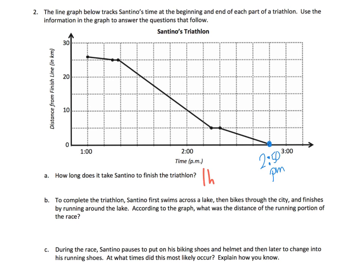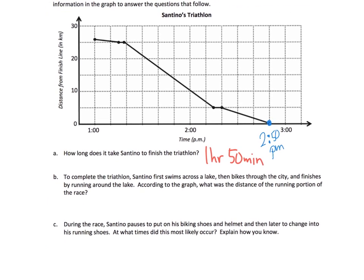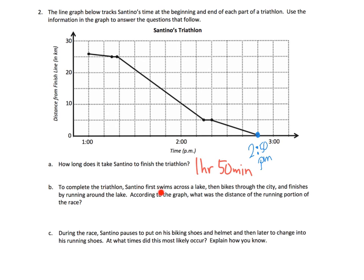And then you can see some kind of fun questions. It says to complete the triathlon, Santino swims across the lake - so that's this piece right here. Then he bikes through the city - that's this piece right here, and it's really steep because he's biking and biking is pretty fast, so he is cutting the distance between him and the finish line really fast, he's cutting it quickly. And then the last one is he's running, and this little piece is running around the lake. So according to the graph, what was the distance of the running portion?